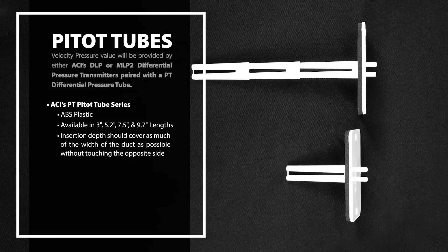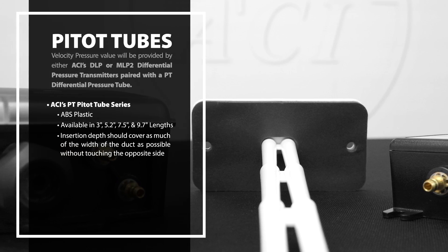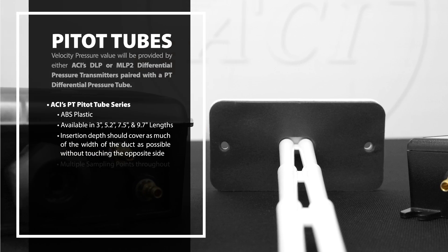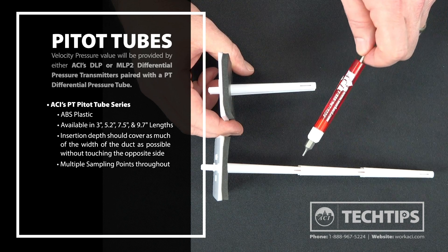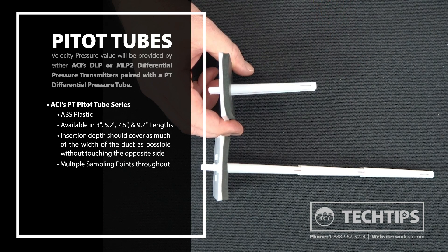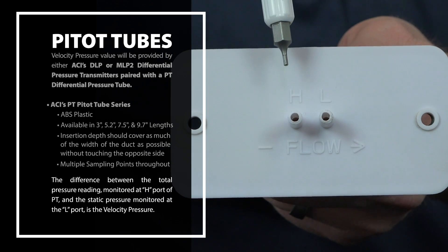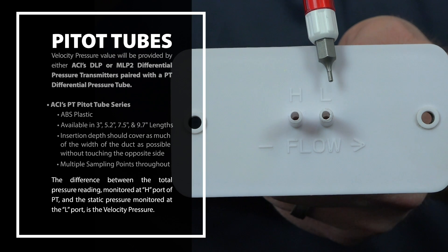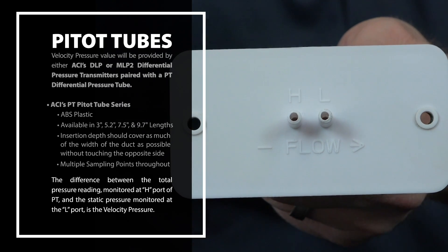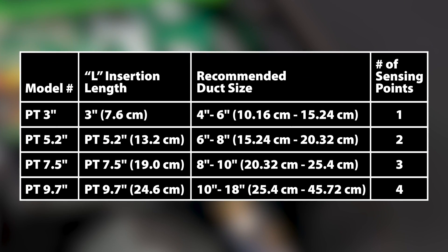The insertion depth should cover as much of the width of the duct as possible without touching the other side. There are multiple sampling points throughout the span of the PT, with the number of sampling points depending on the length of the PT. The difference between the total pressure reading monitored at the H port of the PT and the static pressure monitored at the L port is the velocity pressure. Here is a table showing our recommended insertion lengths by duct size.